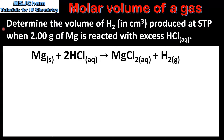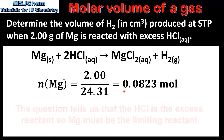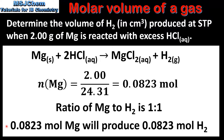In the last example we'll determine the volume of hydrogen in centimetres cubed produced at STP when 2 grams of magnesium is reacted with excess hydrochloric acid. Here we have the balanced equation: magnesium reacts with hydrochloric acid to produce magnesium chloride and hydrogen gas. The first step is to determine the amount in moles of magnesium by dividing the mass by the molar mass, which gives 0.0823 moles. From the balanced equation the ratio of magnesium to hydrogen is 1 to 1, so 0.0823 moles of magnesium produces 0.0823 moles of hydrogen.